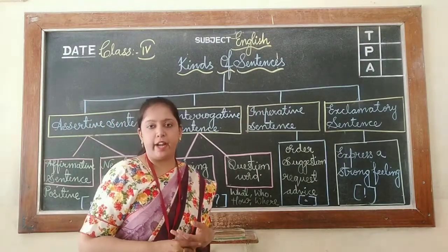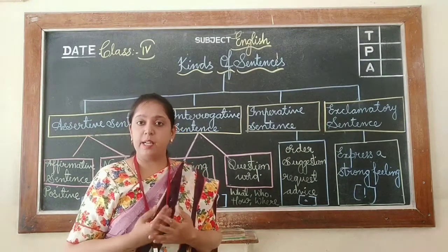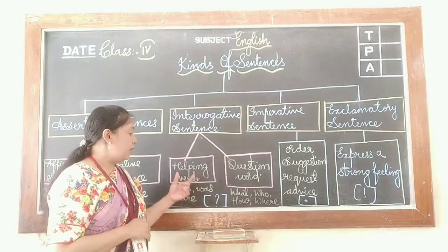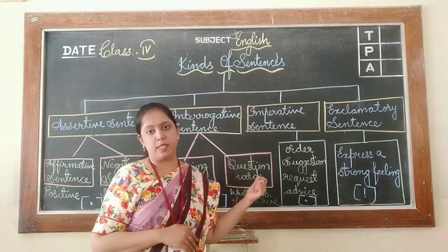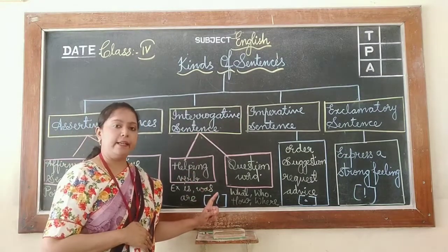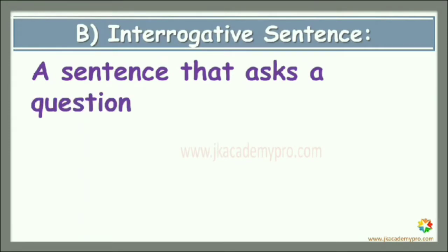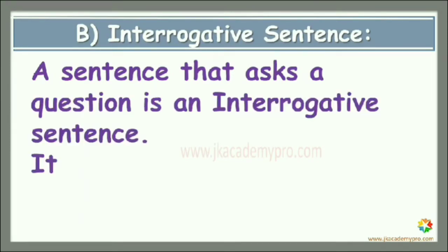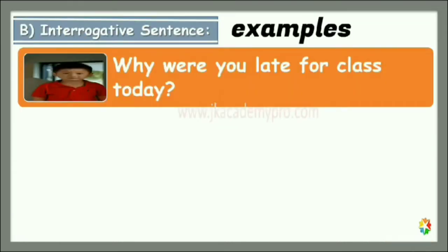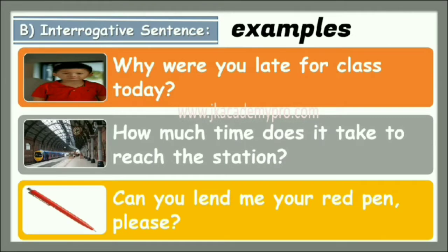Let us move to interrogative sentence. A sentence that asks a question is an interrogative sentence. It always ends with a question mark, and it begins with a helping verb or question word. Examples: 'Why were you late for class today?' 'How much time does it take to reach the station?' 'Can you lend me your red pen please?'